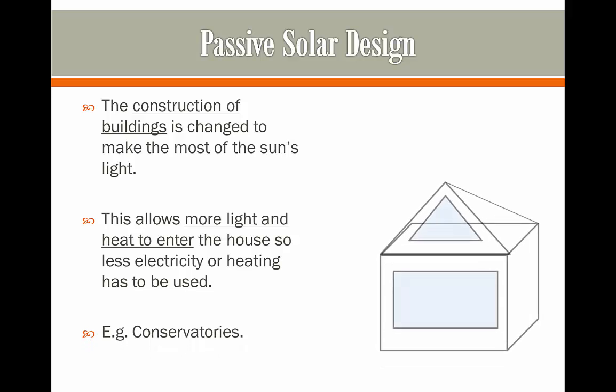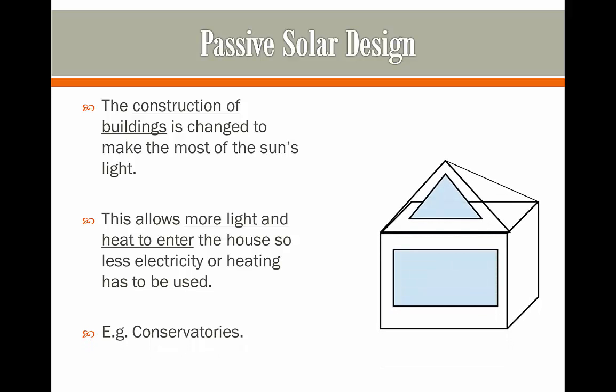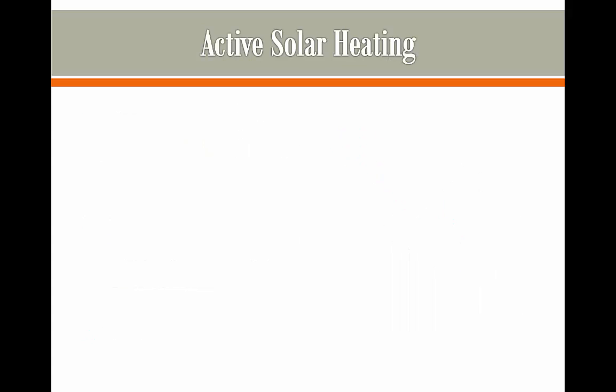For example, conservatories. The Sun moves into the house which then reflects a lot of light on the inside, so we don't have to rely as much on electricity.